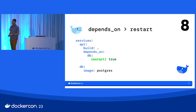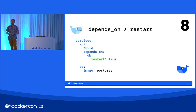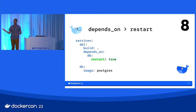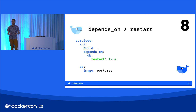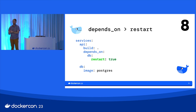Another depends_on option is restart. Maybe my API has an in-memory cache of data from the database, so when I recreate the database, I want that service to restart too. This is a Compose feature at the time you run compose up. If you know that when some service is recreated a dependent one needs to be recreated too because it won't handle that gracefully, this is a quick way to do that. Every time you run up, everything gets to the state you want automatically.